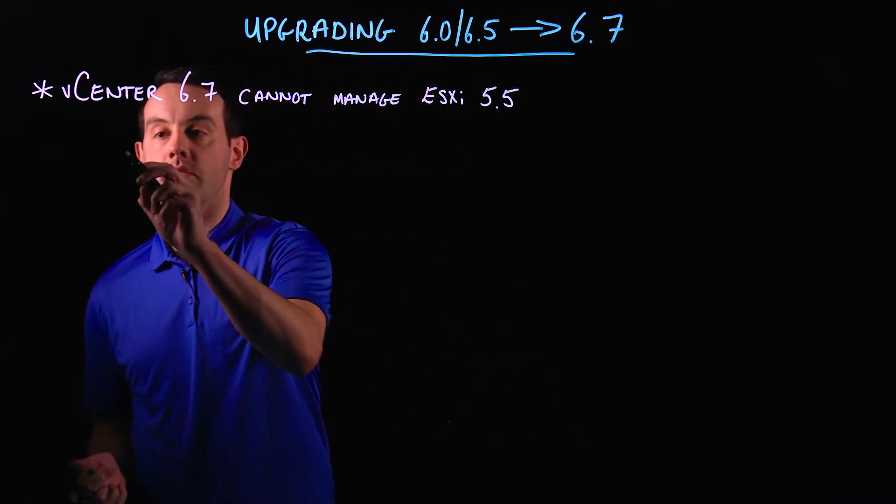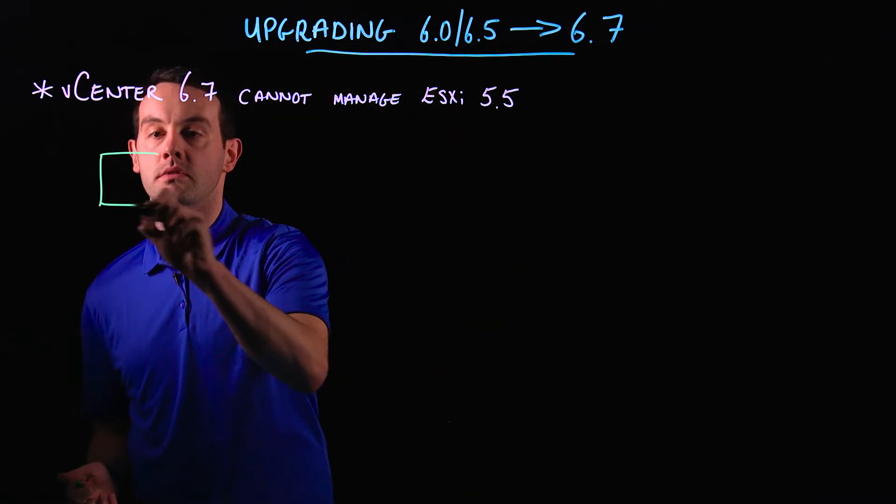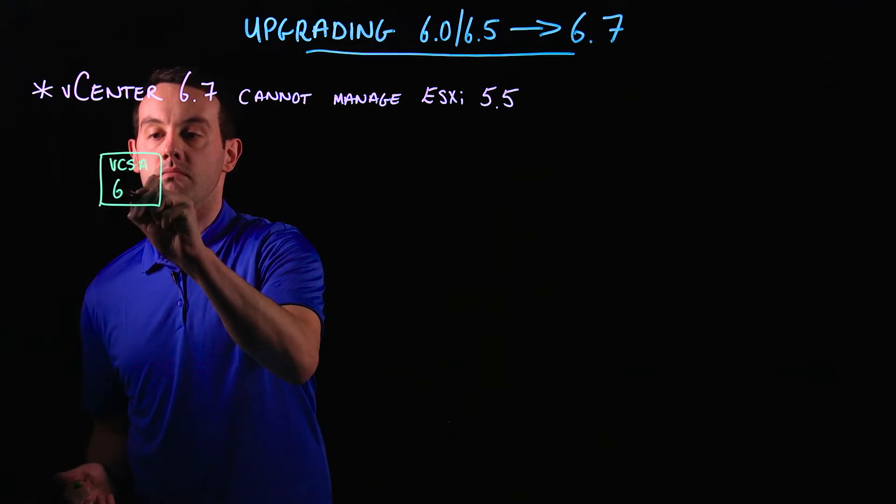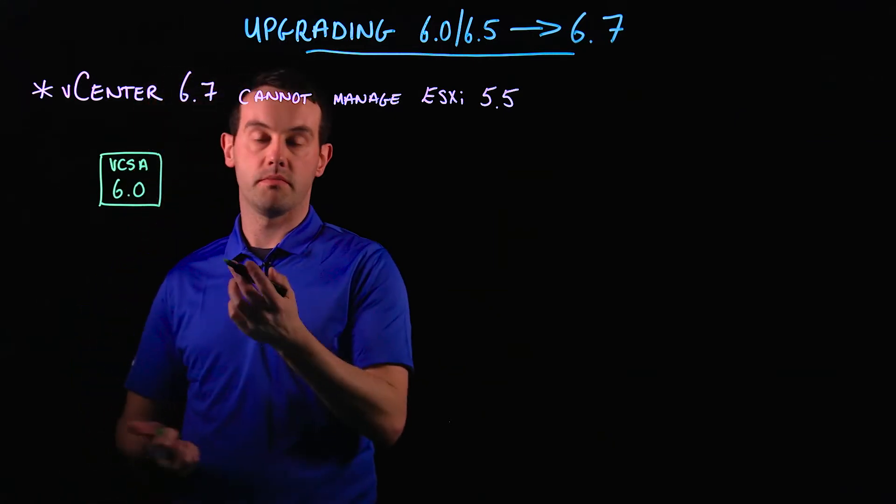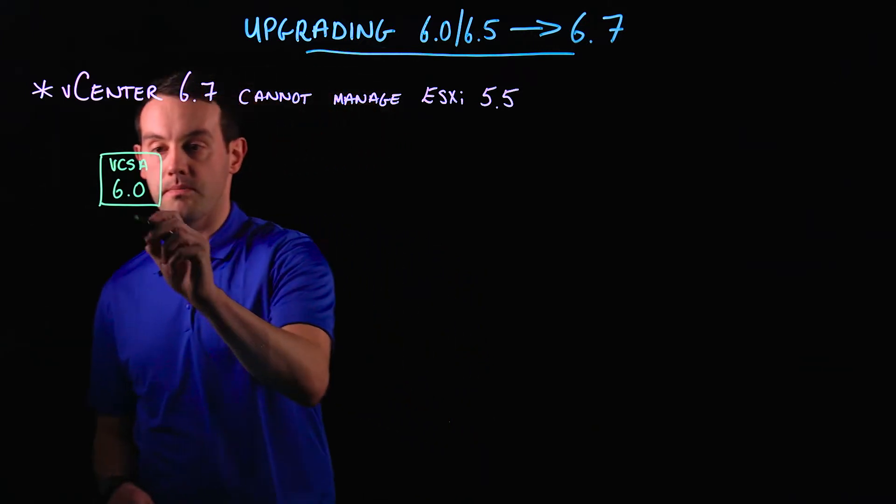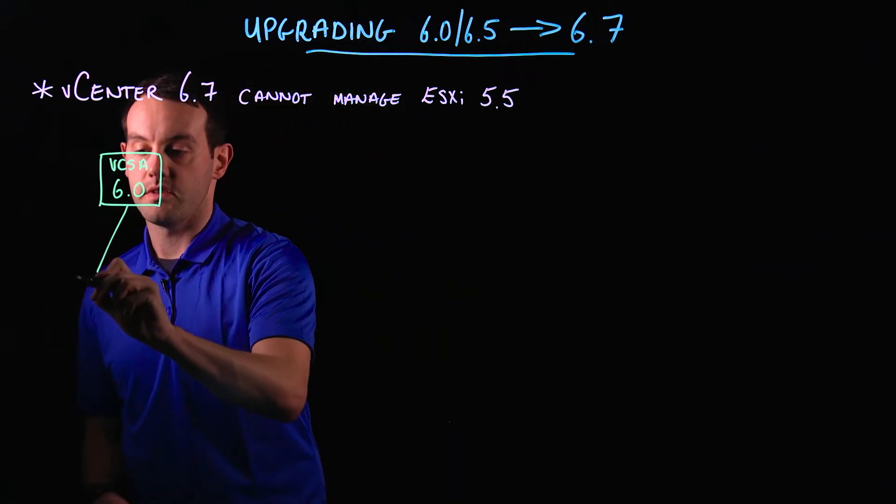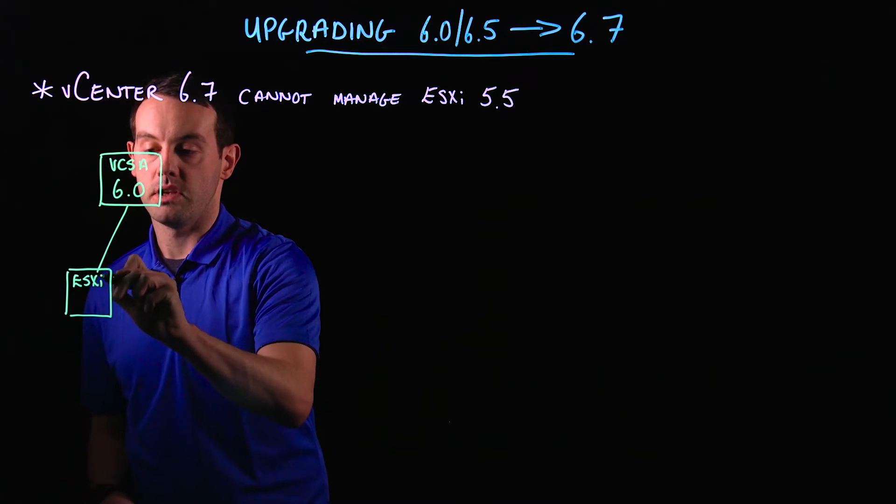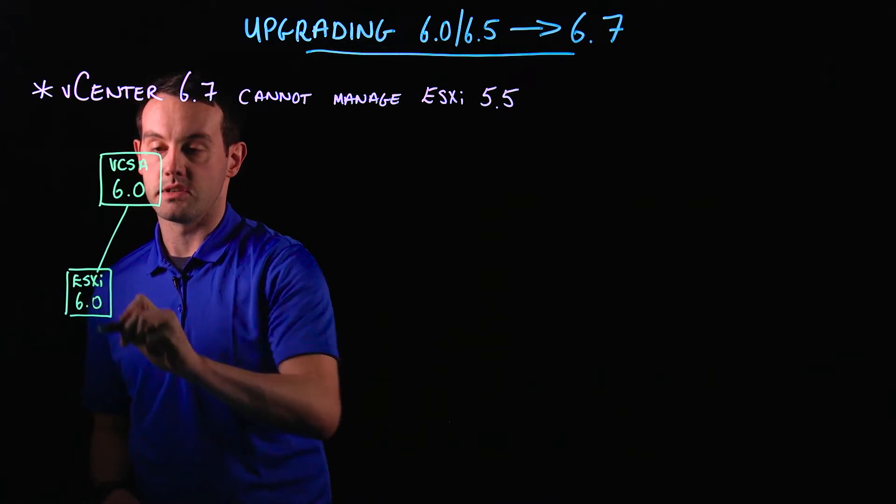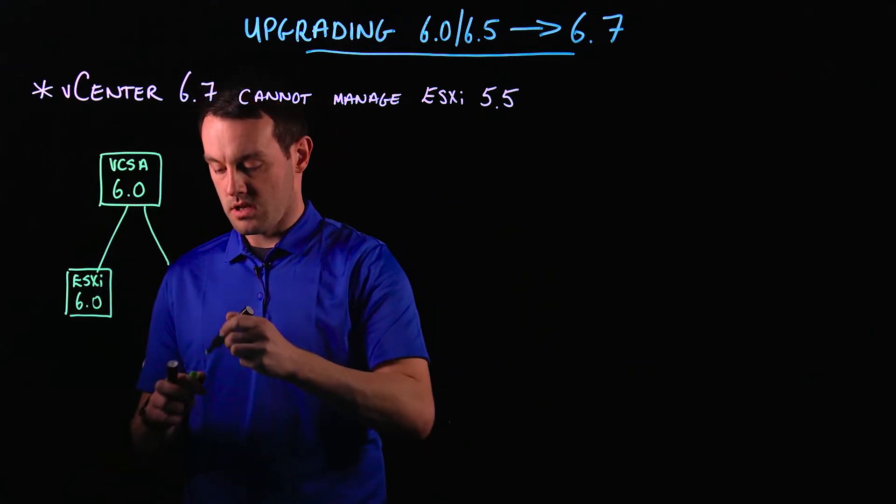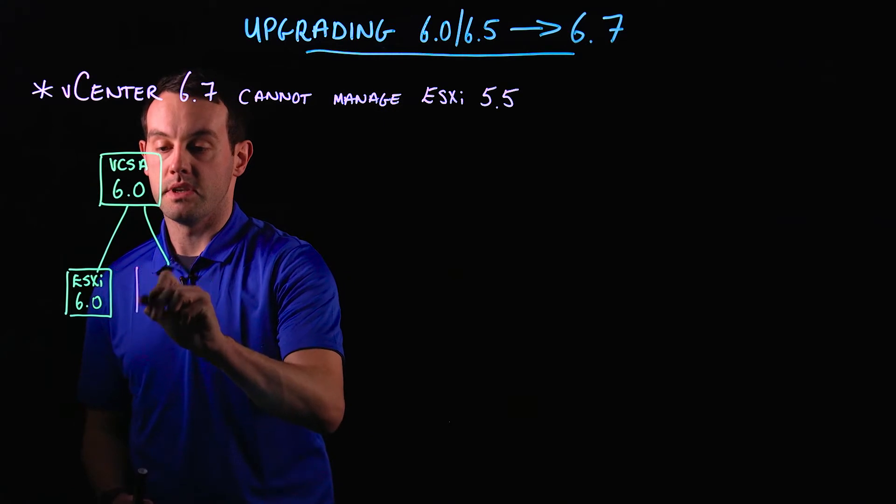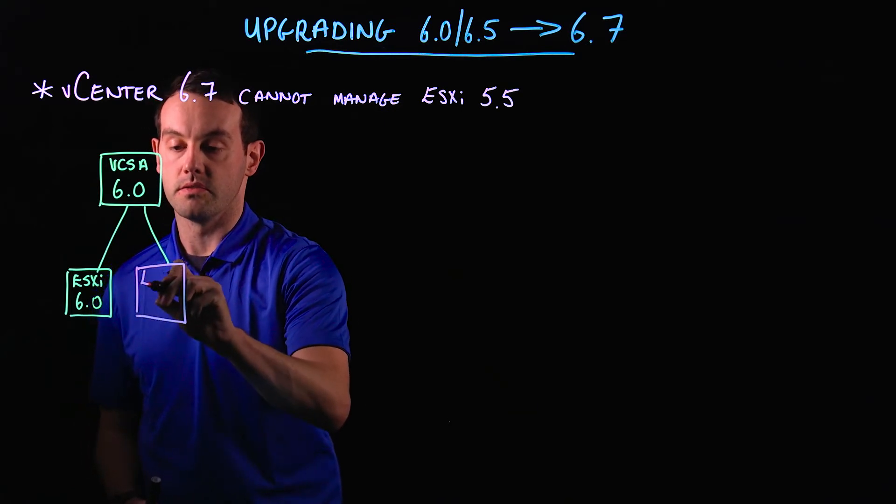We've got a vCSA 6.0 for example—this could be vCSA 6.5 as well. Attached to that vCenter we may have some ESXi 6.0 hosts, but in this environment we may also have some ESXi 5.5 hosts.